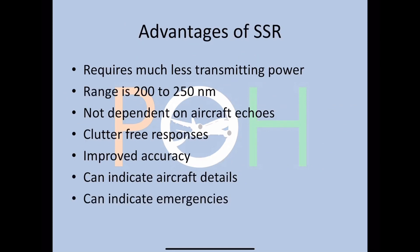The advantages of SSR: it requires much less transmitting power because there is no echo principle like in primary radar, giving a range of 200 to 250 nautical miles. It is not dependent on aircraft echo, clutter-free responses can be obtained, accuracy is improved because it's point-to-point, and it can indicate aircraft details such as ground speed and altitude. It can also help indicate emergencies.